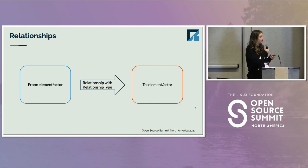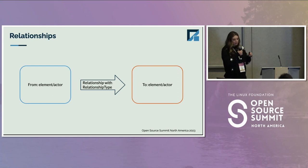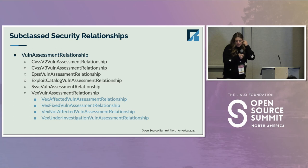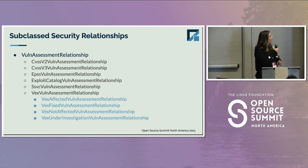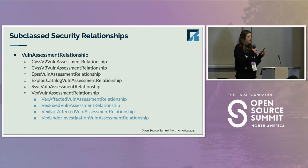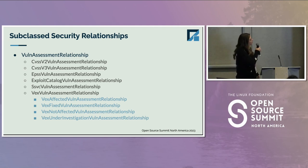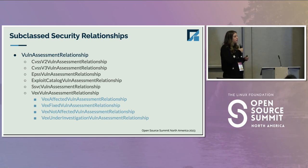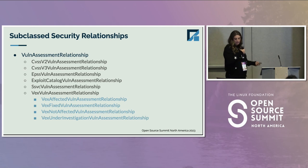The security profile uses relationships just like you would in core — from an element, there's going to be some type of relationship with a relationship type to another element, and especially in the security profile, this could be an actor of some sort. In order to communicate assessment of a vulnerability, which is essentially severity, we chose to use relationships, because you can model metadata using a relationship or a property, but relationships are for things that are changing or may change more frequently. So we have this vulnerability assessment relationship, and inheriting from that are different metrics for scoring a vulnerability: CVSS V2, CVSS V3, EPSS, etc.